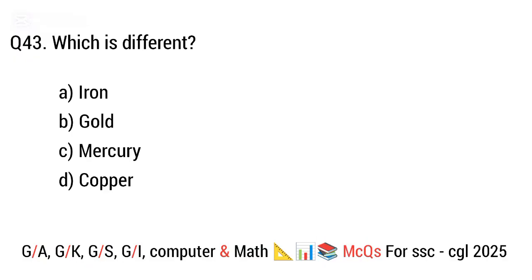Question 43. Which is different? Option A: Iron, B: Gold, C: Mercury, D: Copper. The right answer is option C. Mercury — because it is a liquid metal unlike the others.